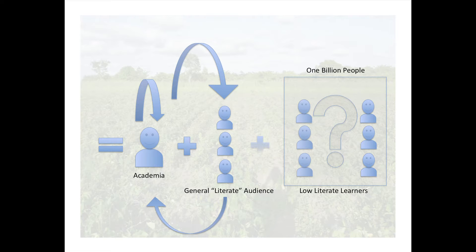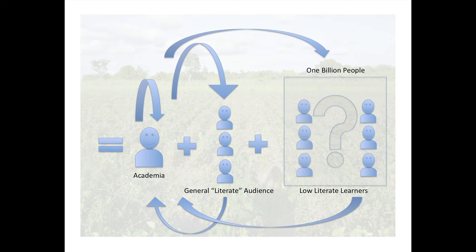As academics, we're leaving out a giant portion of the human population. There's a very strong plus sign because we do have good extension methods to get things out into the general literate population. But we see a very weak plus sign for those one billion people because we don't have really effective mechanisms to do this. Our goal is to strengthen that plus sign. I'm not saying we're going to do it all, but this is something we have to begin to address as an academic community — how can we strengthen this plus sign so that the knowledge we have can impact this one billion people?